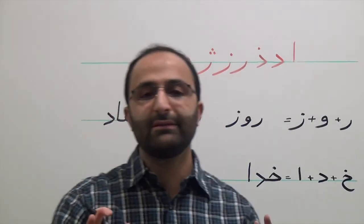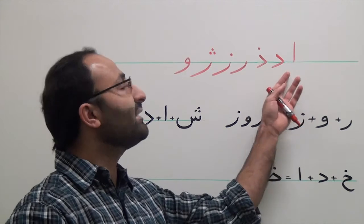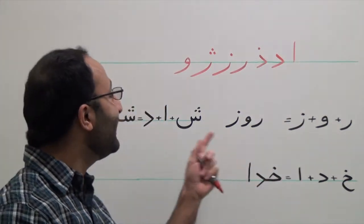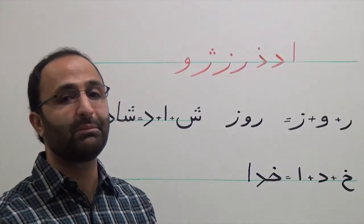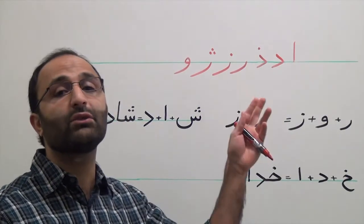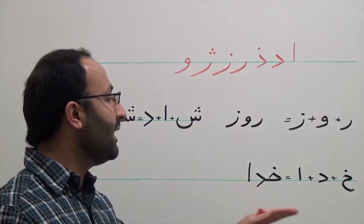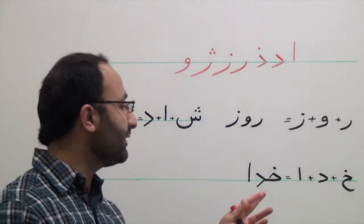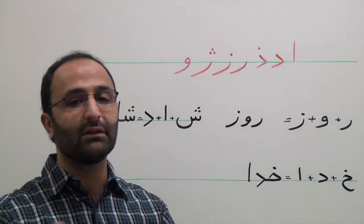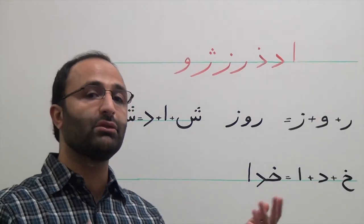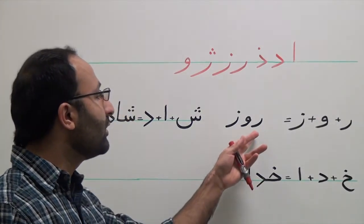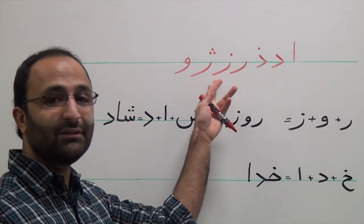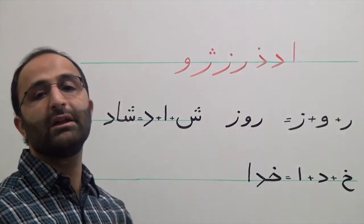These characters cannot be connected to the following characters, but they can be connected to the preceding one, if the preceding character is not one of these characters. For example, in 'Khuda,' Kh and Dal are connected because Kh is one of the characters that can be connected to the following one. But when all the characters in a word are among these non-connecting characters, they cannot be connected together.